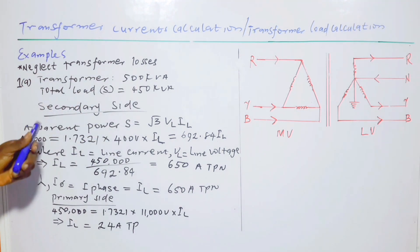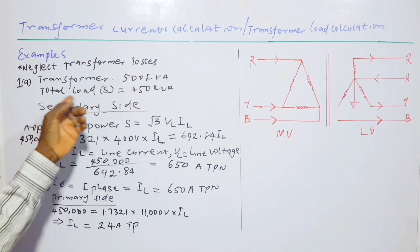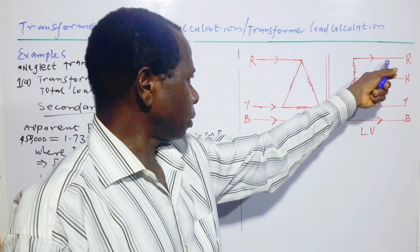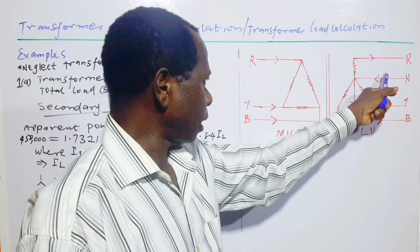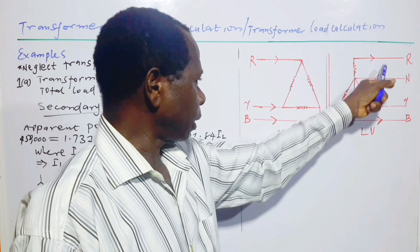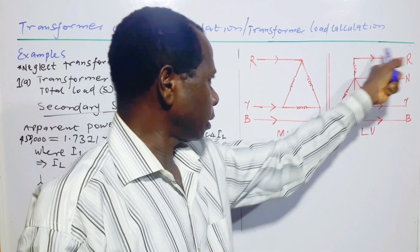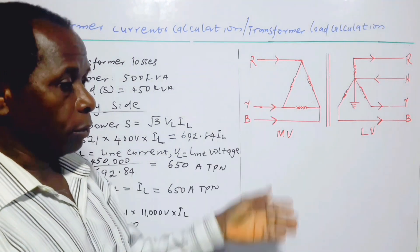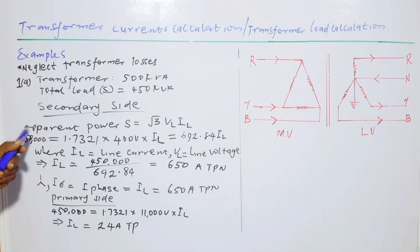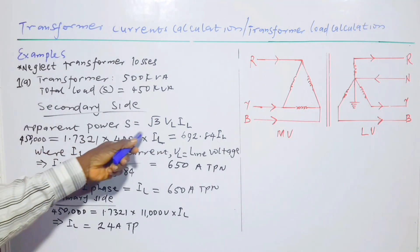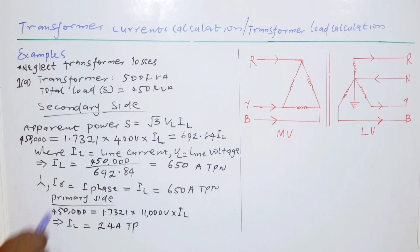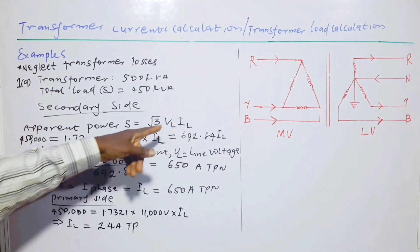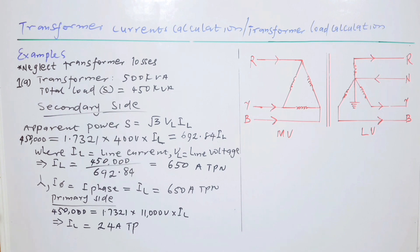Solution to part A: the transformer rating is 500 kVA and the load given is 450 kVA. Starting with the secondary side, which is a star connection, the phase voltage and line voltage are equal, and the line current equals the phase current. The apparent power S is given by the formula: S = √3 × V_line × I_line. So 450,000 = √3 × 400 × I_line.